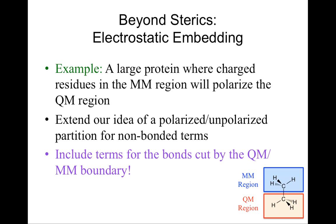We're going to extend the idea of having a polarized-unpolarized partition for the non-bonded terms. This will still be included; however, we're going to extend it and also include terms for the bonds cut along the boundaries. In this cartoon, we're going to figure out how we'll deal with treating the terms associated with bond stretching here, and also angles that might cross the partition.